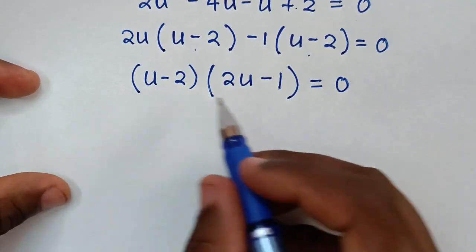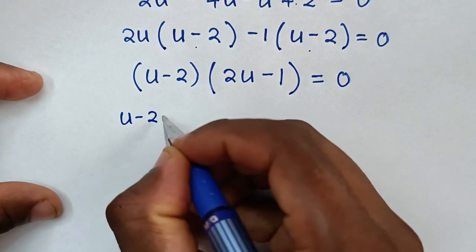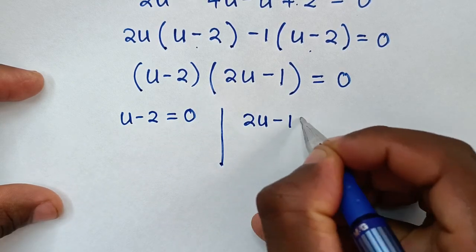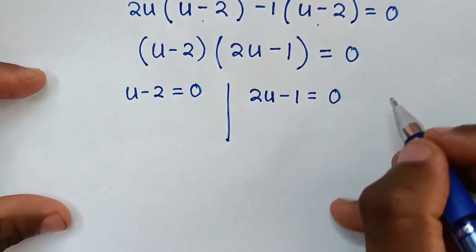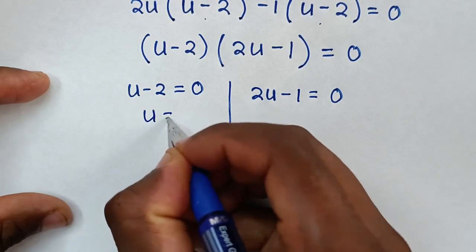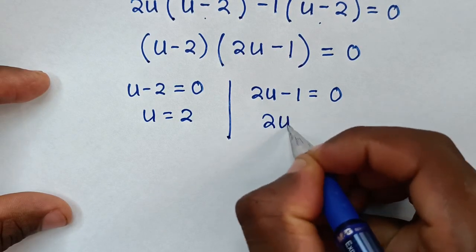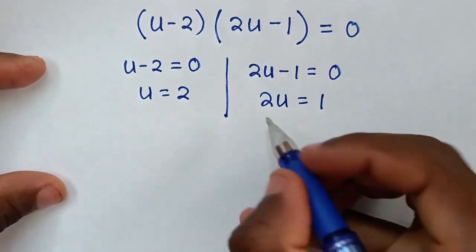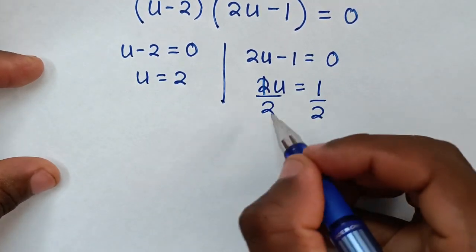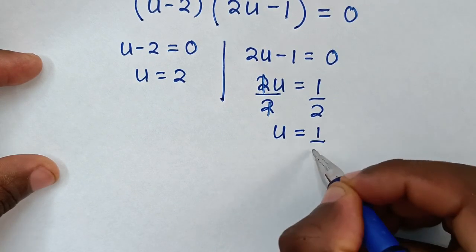We have two solutions. First solution: u - 2 = 0, so u = 2. Second solution: 2u - 1 = 0, so 2u = 1, giving u = 1/2.